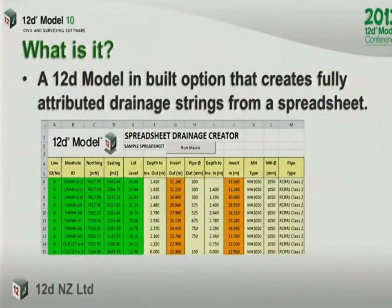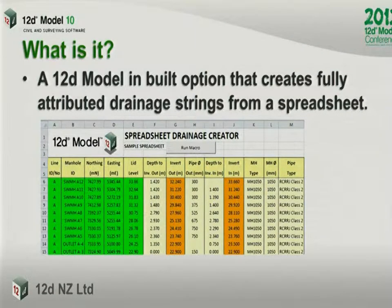It's an option to get data — like as-built data or constructed data — into 12D as a drainage string. Once you get a drainage string in 12D, you can start doing other things like your long plotting, your plan plotting, et cetera. So we needed to formulate some way of getting this data in three dimensions.